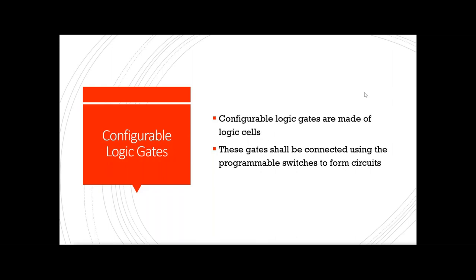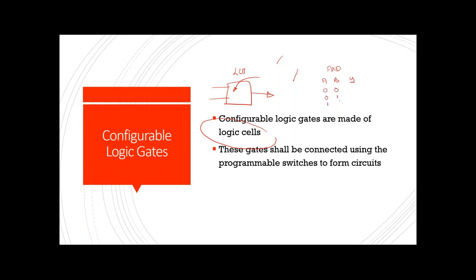Configurable logic gates are made up of logic cells — something like a small memory block — where you have inputs and outputs. Using Verilog or VHDL, you configure these gates. We call this a LUT. For example, take an AND gate with two inputs A and B — possible inputs are 00, 01, 10, 11.